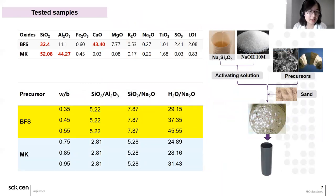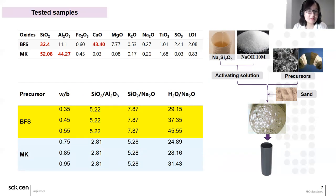In this examination, I used blast furnace slag, BFS, and metakaolin, MK, as two precursors representative of high and low calcium systems respectively. Sodium hydroxide at 10 mol per liter and sodium silicate are used for activating these precursors, and river sand is also used as aggregate. All components are mixed and cast in PVC tubes with a diameter of 97.5 millimeters and cured for 28 days to prepare for permeability testing. Three different water-binder ratios for each type of precursor were examined as shown in the table.